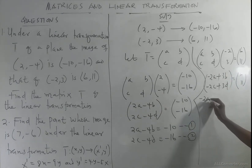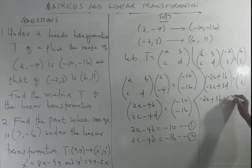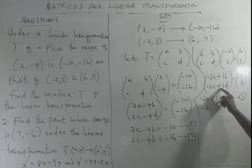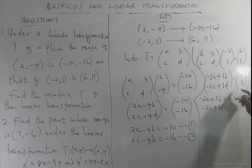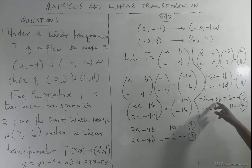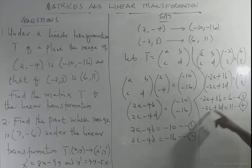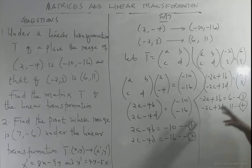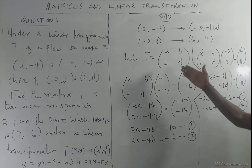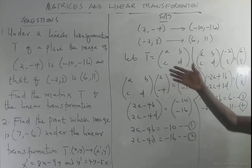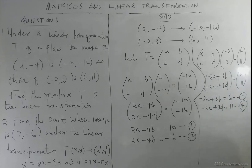Equating corresponding entries: -2a + 3b = 6 (equation 3), and -2c + 3d = 11 (equation 4). Equation 3 is in terms of a and b, equation 4 in terms of c and d. We solve equations 1 and 3 simultaneously, then equations 2 and 4 simultaneously to get a, b, c, and d.